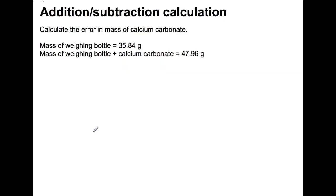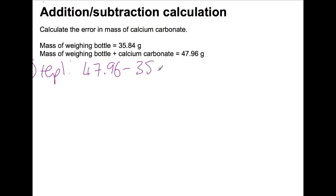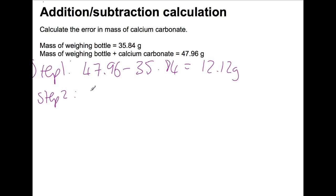Here's an example of an addition and subtraction calculation — we're simply weighing out some calcium carbonate in a weighing bottle. Step one is to carry out the calculation as normal: we want to know the mass of calcium carbonate, so we take the mass of the weighing bottle plus calcium carbonate together and subtract the weight of the weighing bottle on its own. We know that we've weighed out 12.12 grams of calcium carbonate.